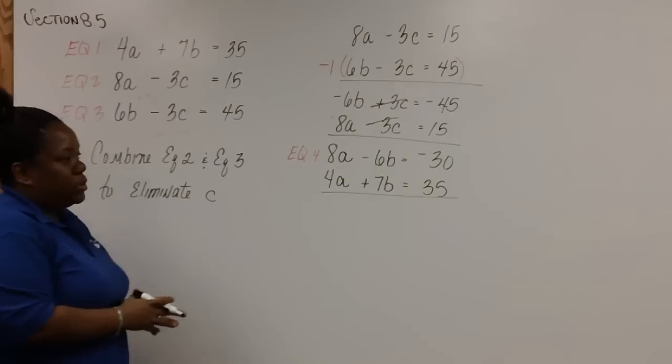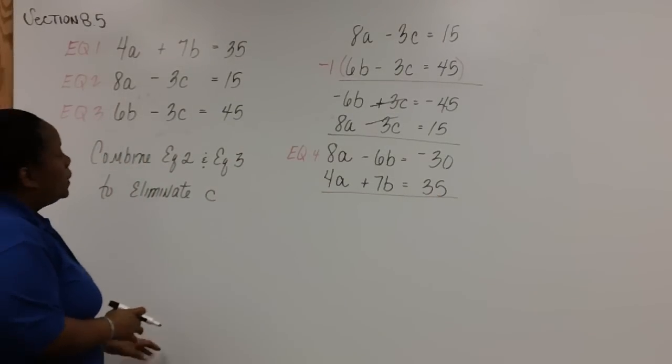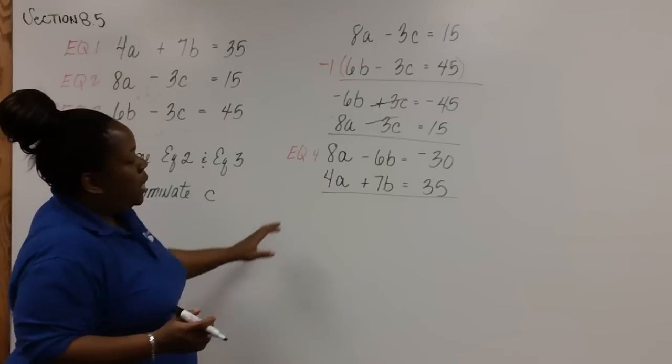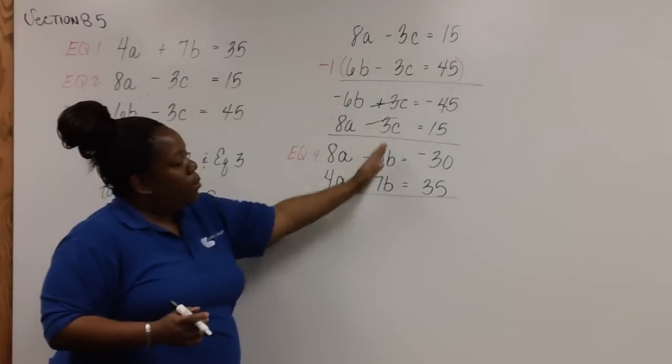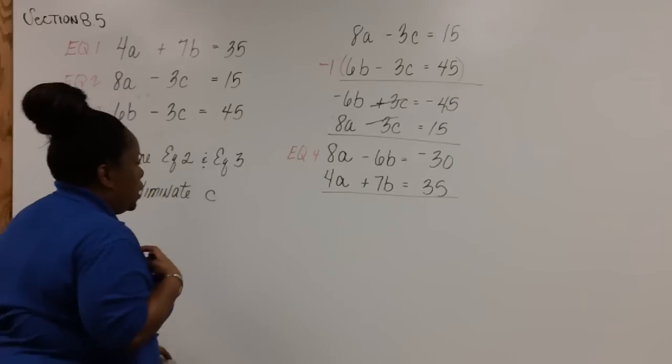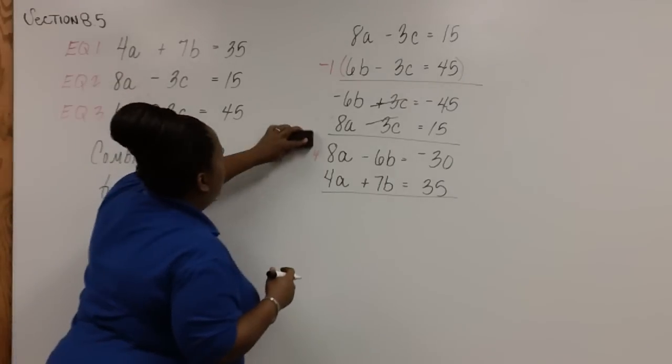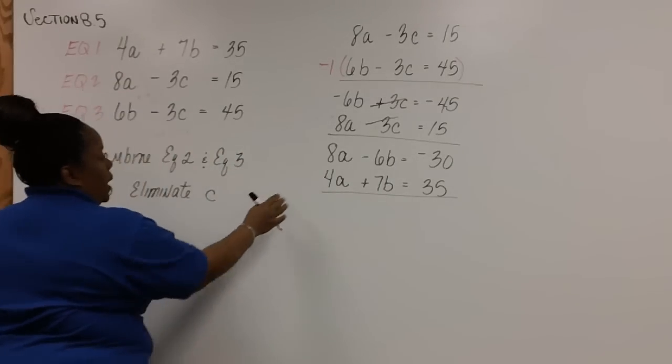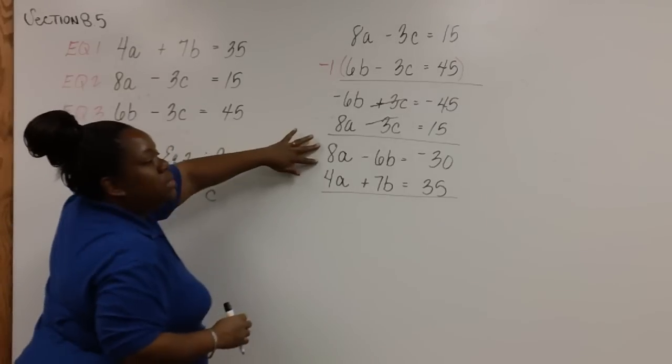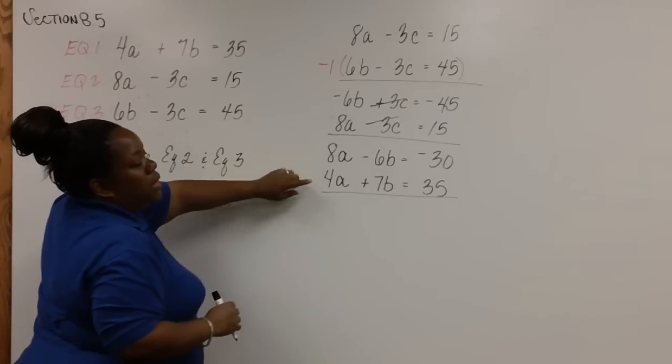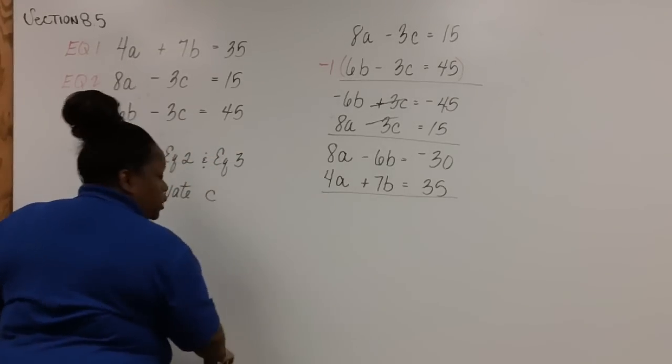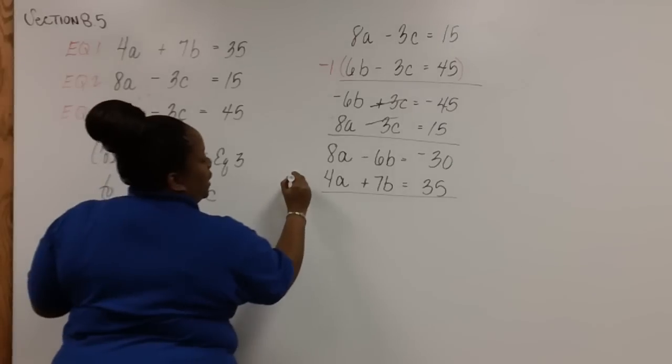Now we need to use elimination. We can eliminate either A or B. It's your choice. I'm going to choose to eliminate A because if this is a positive eight, to get a negative eight here, all I have to do is multiply this by negative two.